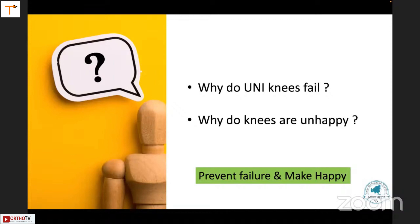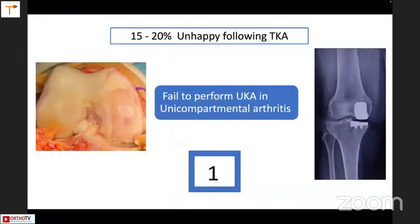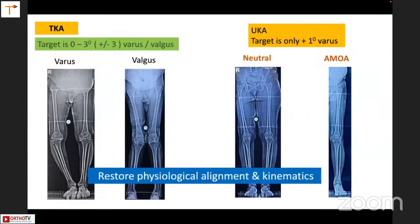Why do UKA fails? We need to prevent failure and make patients happy. If you fail to perform UKA, these are the most unhappy patients. The difference between UKA and TKR: the target window in TKR is plus or minus three degrees, whereas in UKA we are working with plus or minus one degree — only the plus, not the minus.